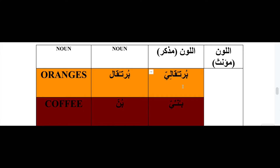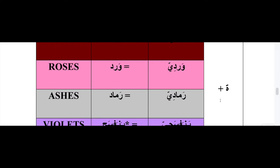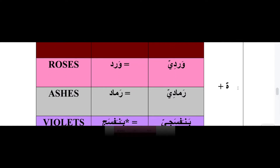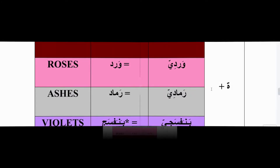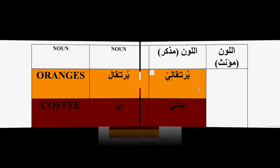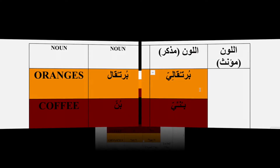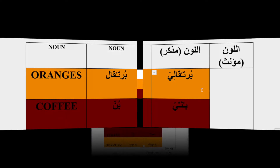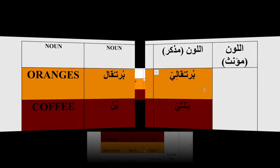We use بورتقالي for something that is masculine — for example, كتاب بورتقالي means 'an orange book.' To make this feminine, we add التامربوطة and say بورتقالية. So for an orange car, for example, we would say سيارة بورتقالية.